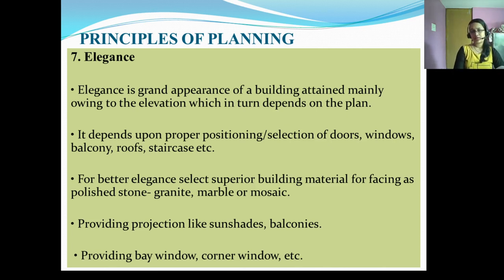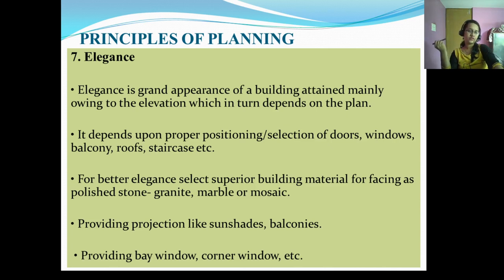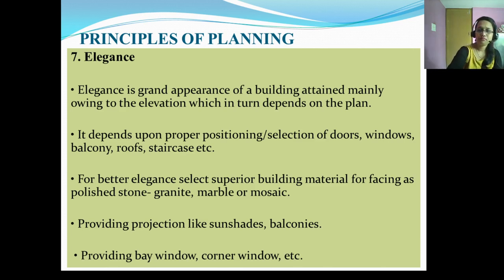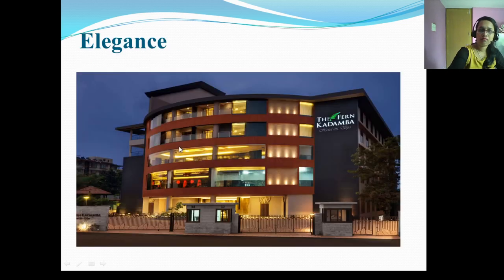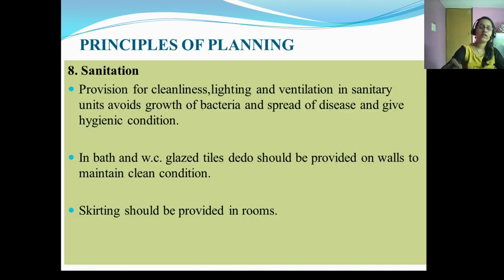Elegance is the appearance of the building related to its elevation, which depends on the plan. It is achieved by positioning doors, windows, and balconies, and providing projections like sun shades, bay windows, and corner windows. Bay windows are outer projections from the building facade. An example shown is the Fern Kadamba in Goa, which demonstrates very good aesthetic elegance.